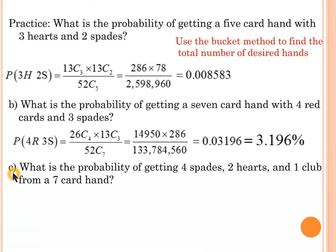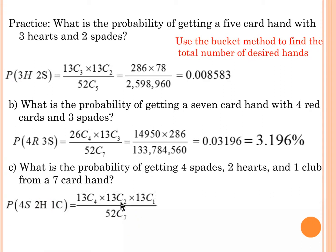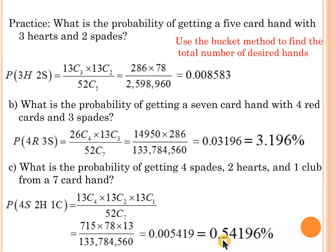What is the probability of getting four spades, two hearts, and one club from a seven-card hand? Spades: 13 choose 4. Hearts: 13 choose 2. Clubs: 13 choose 1. Multiply all three together and divide by 52 choose 7, since it's a seven-card hand. The result is approximately 0.54196% — very small.